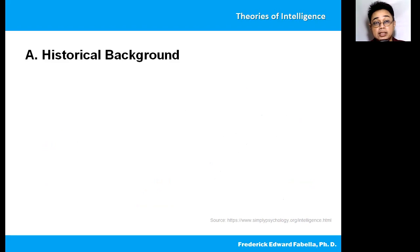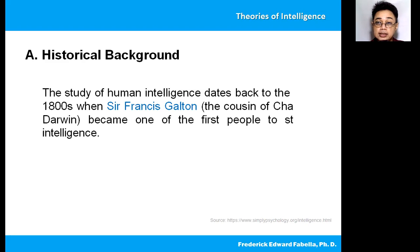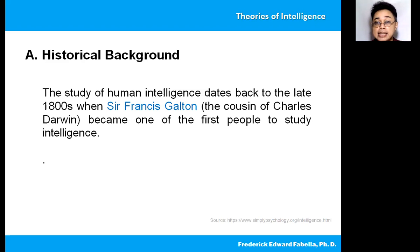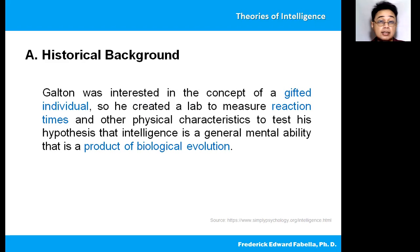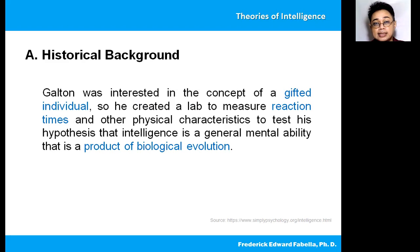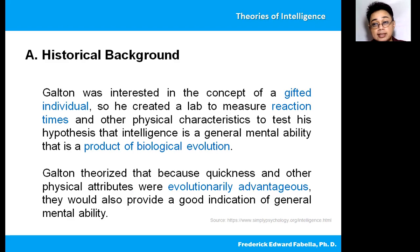What is the historical background in our understanding of intelligence? The study of human intelligence dates back to the late 1800s when Sir Francis Galton, the cousin of Charles Darwin, became one of the first people to study intelligence. Galton was interested in the concept of the gifted individual, so he created a lab to measure reaction times and other physical characteristics to test his hypothesis that intelligence is a general mental ability that is a product of biological evolution. Galton theorized that because quickness and other physical attributes were evolutionarily advantageous, they would also provide a good indication of general mental ability.